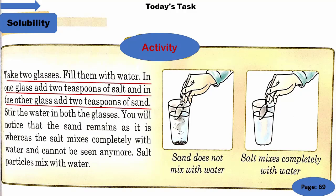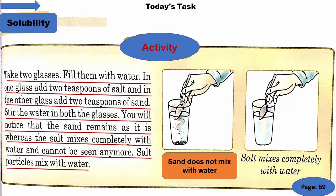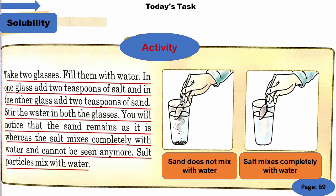Stir means to mix or agitate — when we mix something to dissolve it, we call it stirring. You will notice that the sand remains as it is, whereas the salt mixes completely with water and cannot be seen anymore. So salt particles mix with water, but sand does not mix with water — the salt dissolves completely in water.